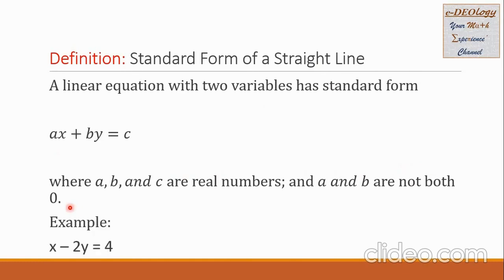Let us have example one: X minus 2Y equals 4. The A here is the coefficient of X, which is 1. The B is the coefficient of Y, that is negative 2. The C is the constant on the right, which is 4.